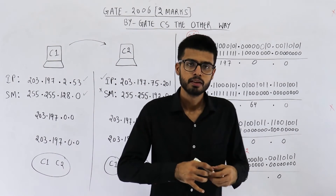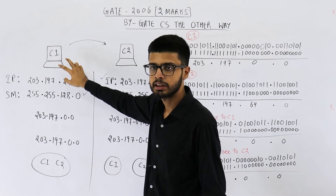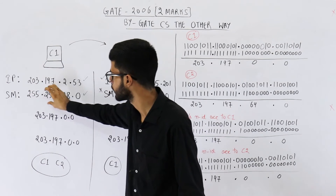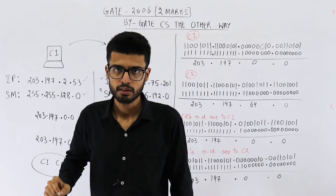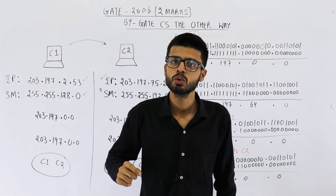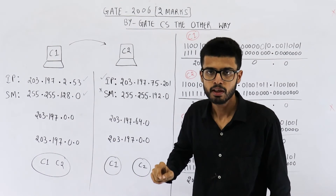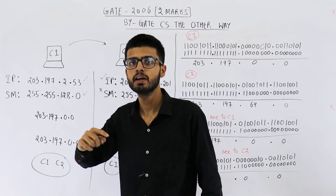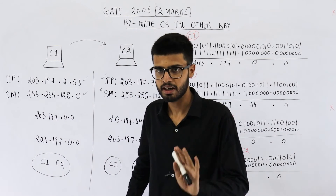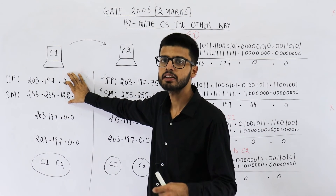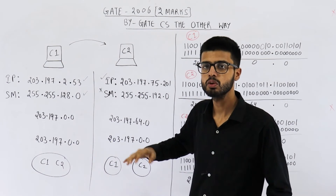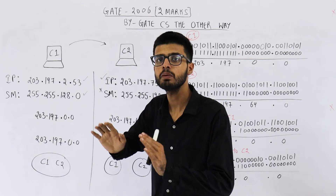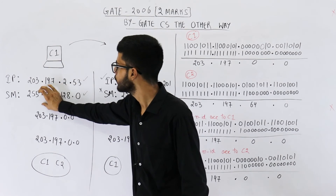This subnet mask is provided to a machine by the internet service provider. This machine thinks every other machine uses the same subnet mask. If you want to send a message to someone, you take the destination IP address and determine its network ID using your own subnet mask. If the network IDs match, you think both machines are on the same network and contact directly; otherwise you send the packet to the router. In reality the situation might be different — an ISP can trick you into thinking machines are on the same or different networks simply by changing the subnet mask.